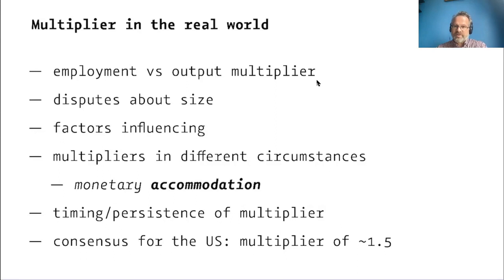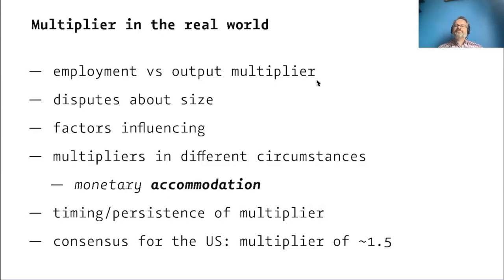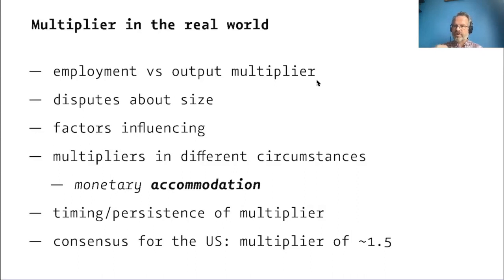If the central bank is trying to cancel out what the budget would otherwise do, the effect of the budget is going to be smaller. There's also a question of timing and persistence. In a concrete policy setting or empirical research, we have to account for how fast and how long the multiplier effect occurs. If a multiplier typically takes effect over several years but we measure it only in the same year the spending takes place, our estimate will be too small.